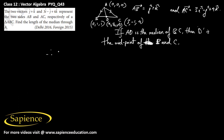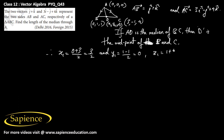Therefore x1 = (0+3)/2 = 3/2, y1 = (1+(-1))/2 = 0, and z1 = (1+4)/2 = 5/2. So the coordinates of point D are (3/2, 0, 5/2).